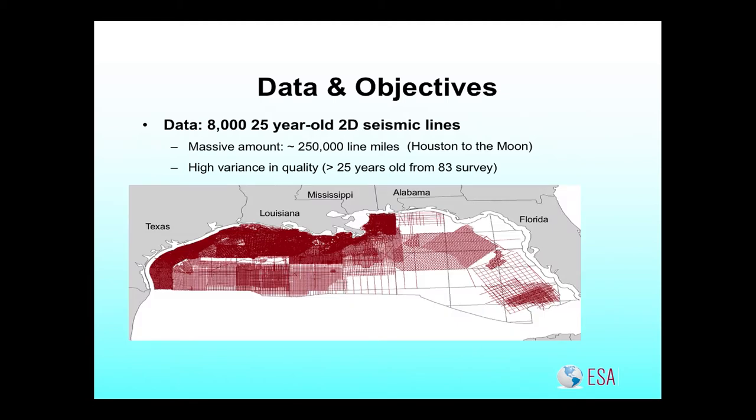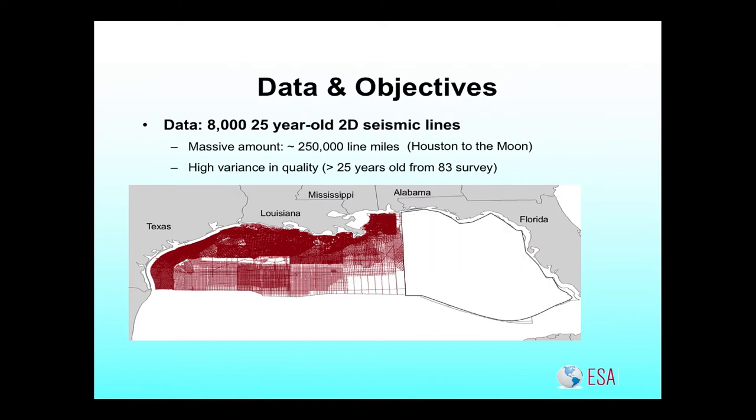This is the Gulf of Mexico, and this is the distribution of the lines we have. We've eliminated some areas because they're not candidates for salt analysis, but in this area we have a lot to work with, and you can get some idea of the spatial density of what we have.